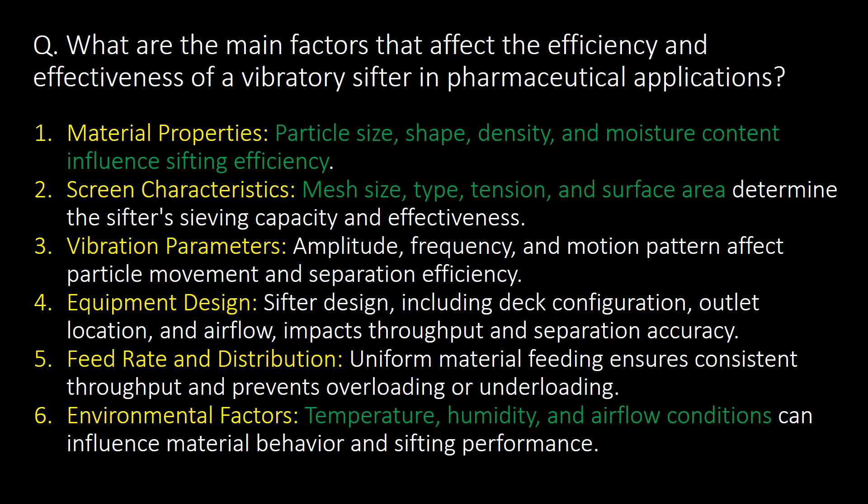What are the main factors that affect the efficiency and effectiveness of a vibratory shifter in pharmaceutical applications? The six main factors are: first, material properties — particle size, shape, density, and moisture content; second, screen characteristics — mesh size, type, tension, and surface area; and also vibration parameters, equipment design, feed rate and distribution, and environmental factors like temperature, humidity, and airflow conditions.